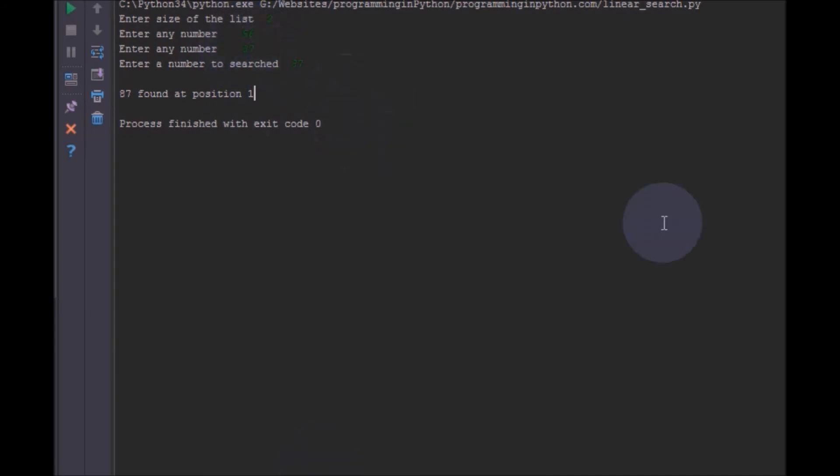So I will run again and I will give a bigger list. I will give a list of size 5: 12, 32, 65, 68, 98. I will give something like 65. You can see 65 is found at position 2. This is 0, this is 1, and this is 2. So it is showing correctly.